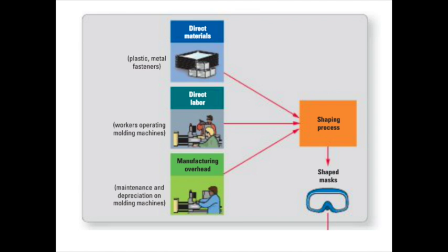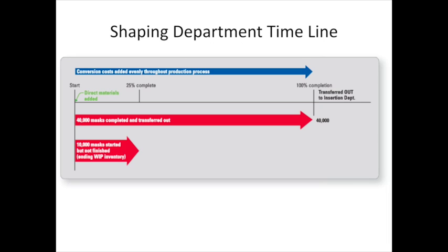For this particular process in our shaping department, we can draw our timeline here like we did before. We find that conversion costs are added evenly throughout the production process. Direct materials in this department are added at the beginning of the process. We also find that 40,000 masks have been completed and transferred out by the end of the period — they're 100% complete and moved to the next process. However, 10,000 masks were started but not completed, so they remain as ending work in process in our shaping department, and they are 25% complete.